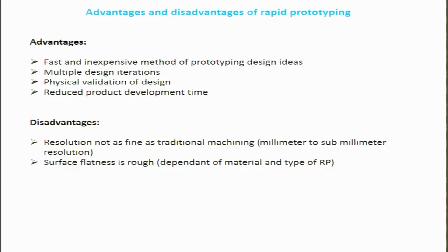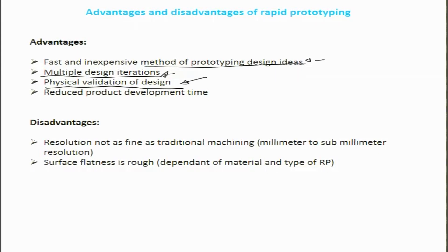There are several advantages of rapid prototyping. It is a fast and inexpensive method of prototyping design ideas. You can have multiple design iterations and visualize them more easily with a physical model in hand rather than a mental visualization. There is also physical validation of the design — sometimes in reverse engineering — to see how the CAD geometry plotted in space would come out, giving quite a bit of validation of how a manufacturing method like CNC would work on the CAD data.